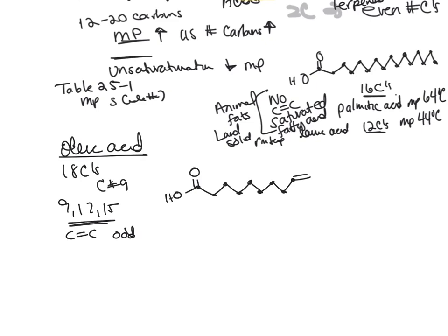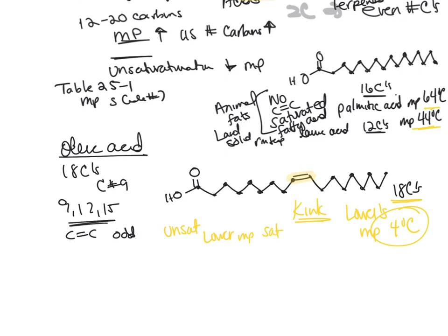So here's carbon number nine and I'm making that cis. So there's 18 carbons. This is a cis double bond and that cis will actually cause a kink in this folding. And that kink, because it's not able to stack, lowers the melting point. And so if you look at that melting point, it's four degrees Celsius. That's significantly lower even with 18 carbons.